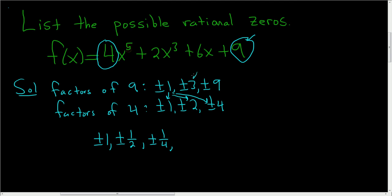Then you go to the next one, so 3. So 3 over 1 is 3. And you do 3 over 2, which is just 3 over 2. And lastly, 3 over 4, which is just 3 over 4.